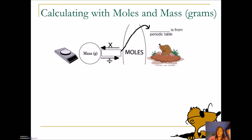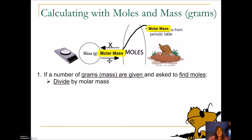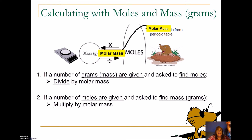Let's go back to the front table in your packet and fill in the mass part. Fill in that box with molar mass and the fact that molar mass comes from the periodic table. Anytime you're given grams and asked to find moles, you divide by molar mass. However, if you're given moles and asked to calculate the number of grams, you multiply by molar mass. So for molecules you use 6.02 times 10 to the 23rd; for mass, you use molar mass or atomic mass from the periodic table.